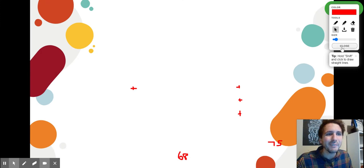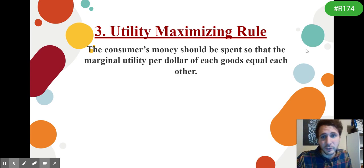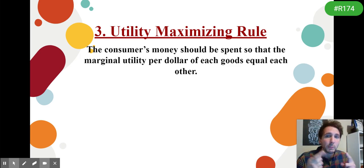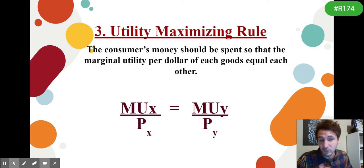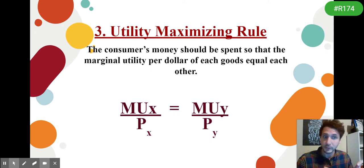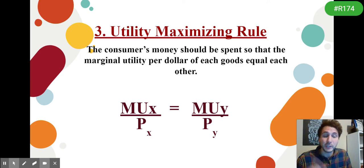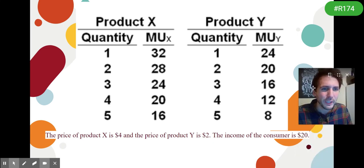There's a rule that makes this even easier — the marginal utility maximizing rule. The consumer will continue to spend until the marginal utility per dollar of each good is equal to one another: MU of X / Price of X = MU of Y / Price of Y. In other words, find where your 'utes for your loots' are equal — the 'matchy-matchy' — and ask yourself if you can afford it.